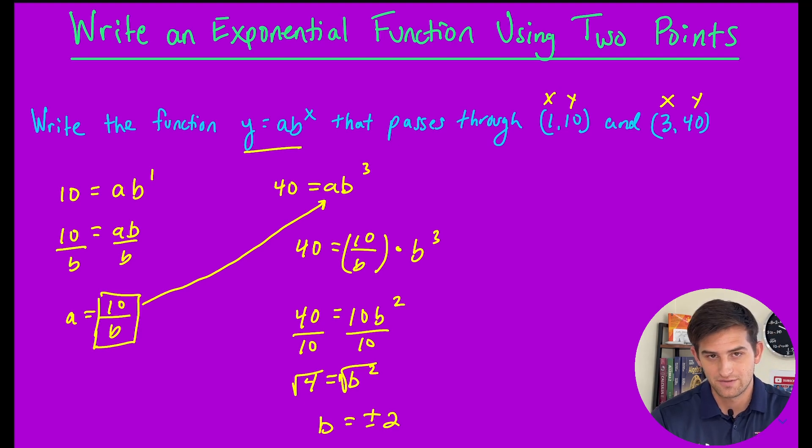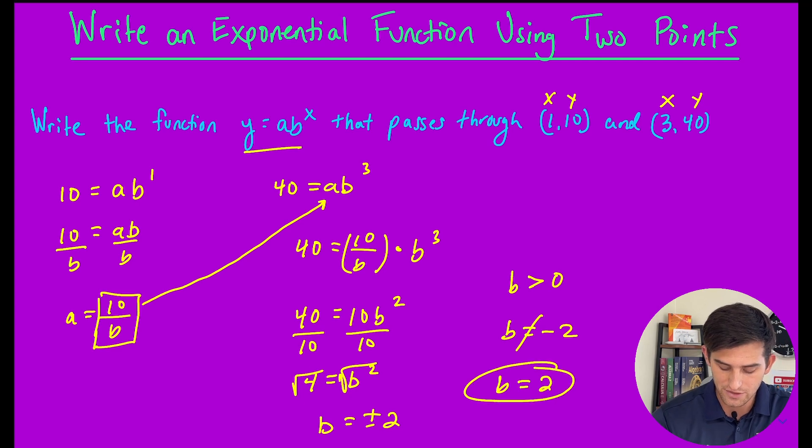What do we know about exponential functions? We know that b has to be greater than 0. So b cannot be negative 2, meaning the only logical answer is b equals 2.